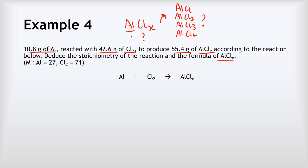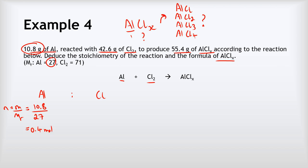We start by working out the stoichiometry of the left-hand side by finding the mole ratio of aluminium to chlorine. Moles of Al = m/MR = 10.8 grams divided by 27, giving 0.4 moles. Moles of Cl₂ = 42.6 grams divided by MR of 71, giving 0.6 moles.